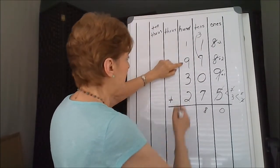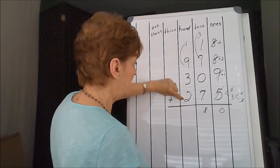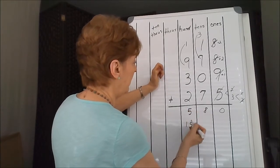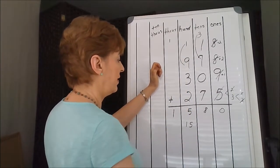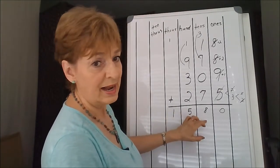1 plus 9 is 10. 13, 14, 15. 15 needs to be split into 1,580.